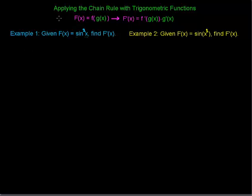In this video, we're going to apply the chain rule with a couple of different trig functions. It might be helpful to remember that the chain rule is used when we have a function that turns out to be the composition of two functions, f of g of x, and we want to find the derivative of that composition using the chain rule formula. In practice, it's very helpful to recognize when a function is the composition of two or more functions.